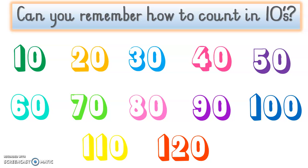Well done — you just counted in tens! Now Mrs Mitchell has got two hands on her picture in front of you. We all have two hands. Put your hands in front of you, look at the screen and at your fingers, and we are going to count in ones, starting at your pinky.